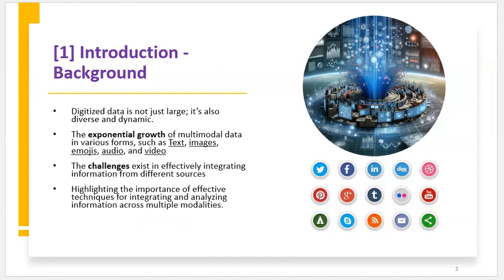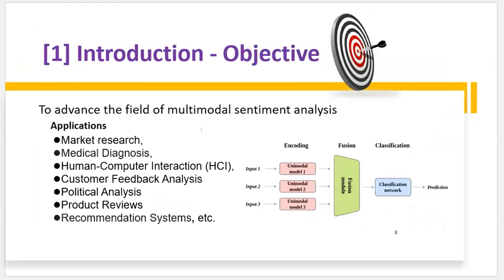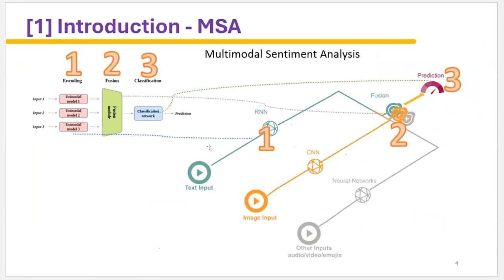In our digital world, multi-modal data is now everywhere. The exponential growth of multi-modal data highlights the importance of employing advanced techniques to manage it effectively. Given the broad range of possible applications, our goal is simply to advance multi-modal function fusion techniques. The diagram here is a classic one for multi-modal sentiment analysis. The IN is used for processing text modality and CAM for images. We might have other neural networks for different modalities, such as audio or videos, and all those learned extractions will then combine at a fusion layer and pass for prediction.